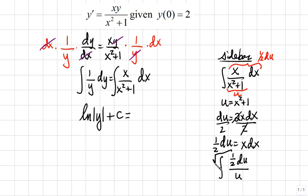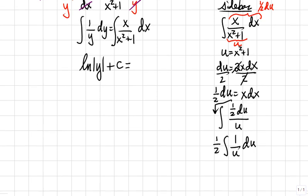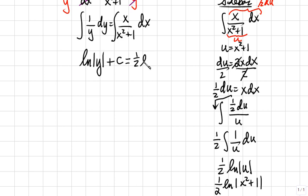Since one-half is a constant, it can be written outside the integral, giving us one-half times the integral of 1 over u du. This is again the form of the natural log of the absolute value of u. Since u equals x squared plus 1, this result becomes one-half natural log of the absolute value of x squared plus 1, plus a constant.